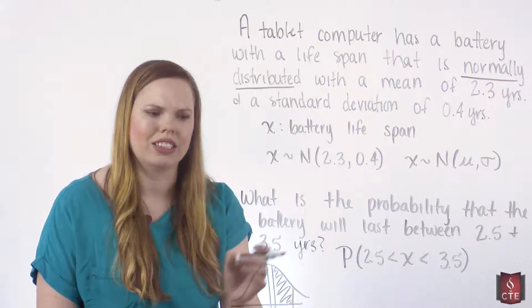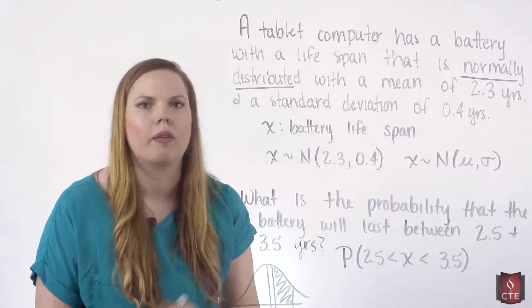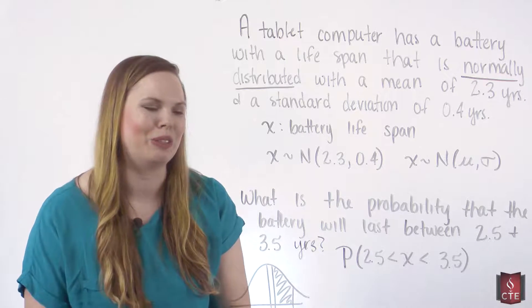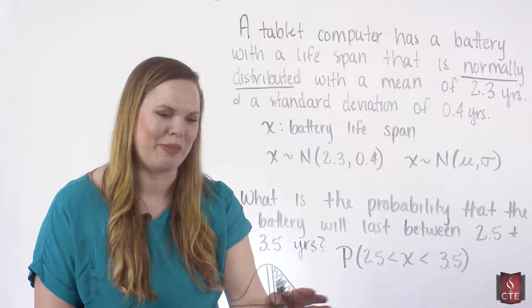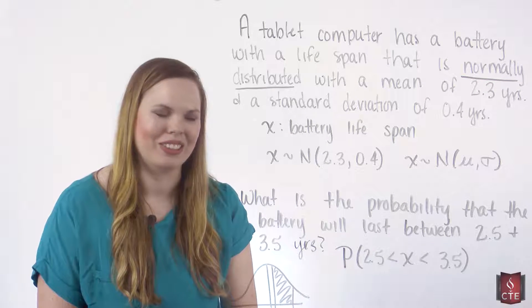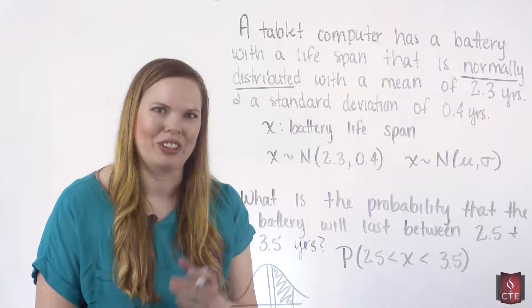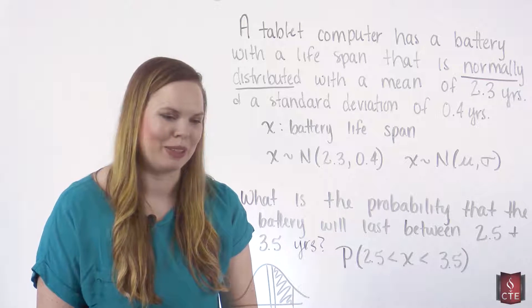That's the area that we're wanting to look at, because the area and probability are the same thing on a normal distribution curve. The area under the curve is 1, so it works out nicely. When you're talking about parts of the whole, it's the same as the probability.